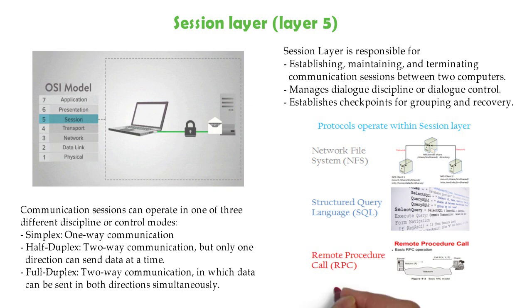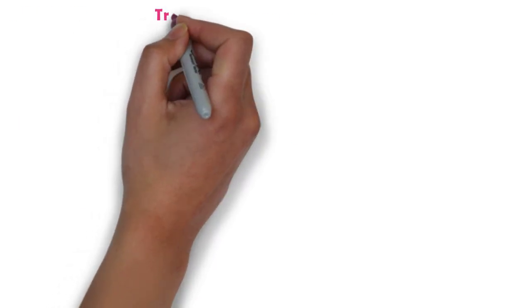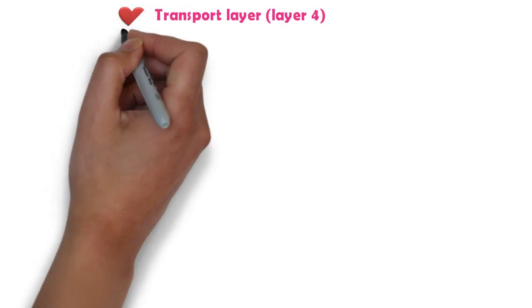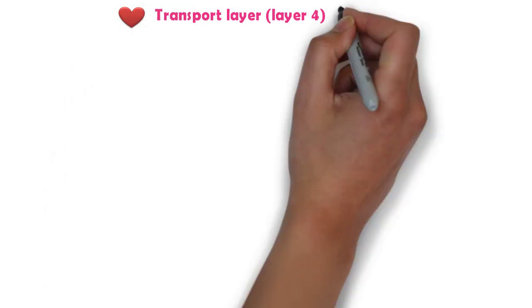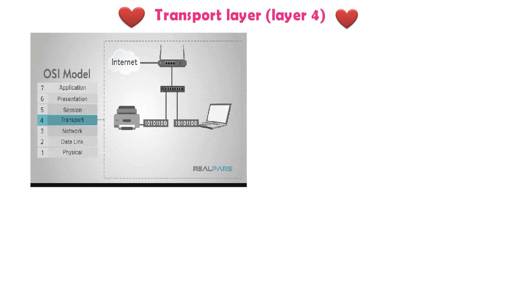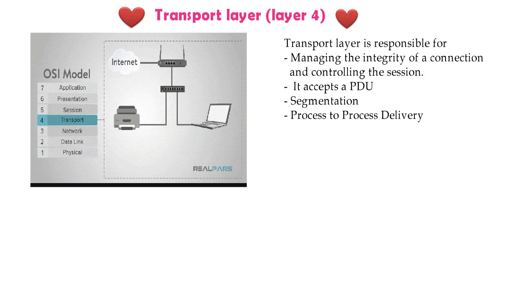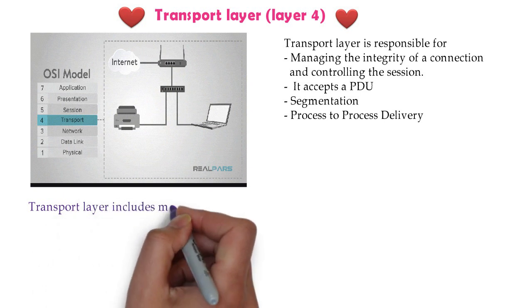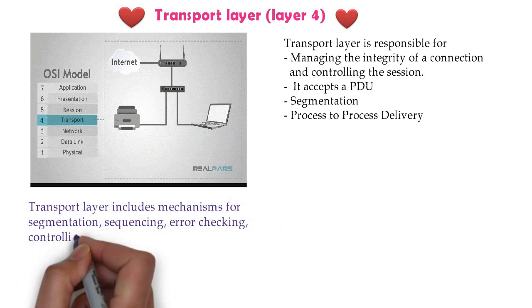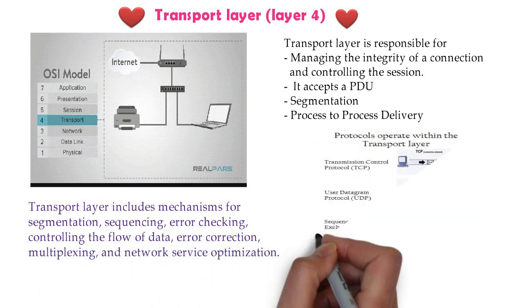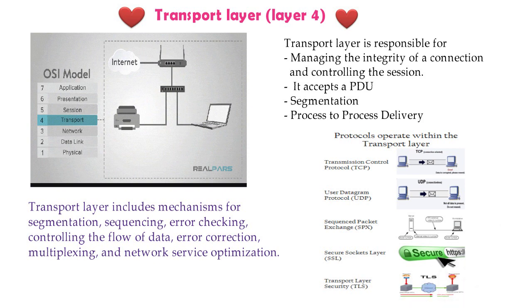Now layer 4, the transport layer, known as the heart of the OSI reference model. The transport layer is responsible for managing the integrity of a connection and controlling the session. It accepts PDUs and handles segmentation, process-to-process delivery, sequencing, error checking, flow control, and error correction. Some protocols are TCP, UDP, SPX, and SSL.